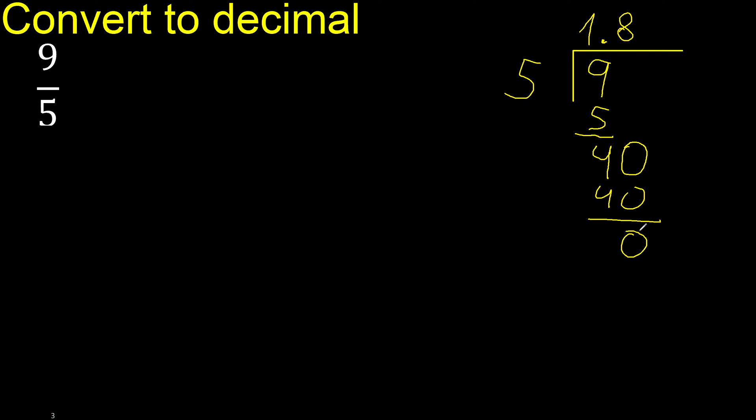40 minus 40 is 0. There is no number that goes down, therefore finish.